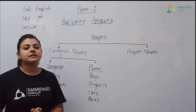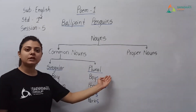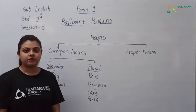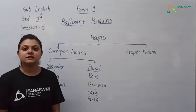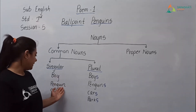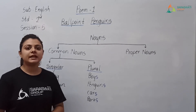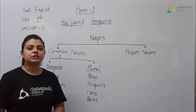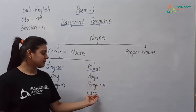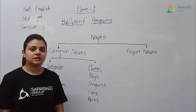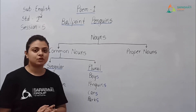Now, in common nouns, there are subtypes — singular and plural. When we name any one thing, we use the nouns as we have learnt, like boy, penguin, car. But when we have to name more than one thing, we need to make a change in the nouns. Here, we add 's' at the end of nouns. This is one way of showing that we are talking about many things, not one.